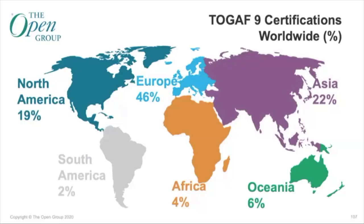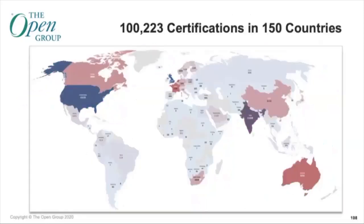Looking at worldwide trends, we're now in 150 countries — up from 149 last quarter. The most recent country added is Liberia in West Africa. We've had steady growth: seven years ago it was 62 countries, five years ago 122 countries, two years ago 137 countries. We're starting to run out of countries to add.